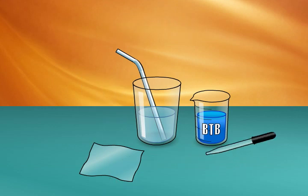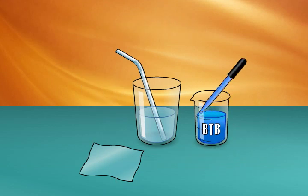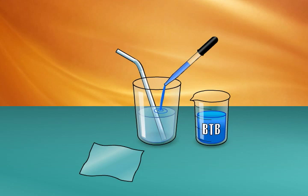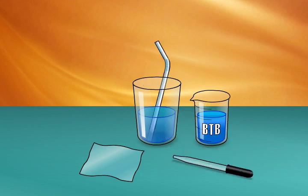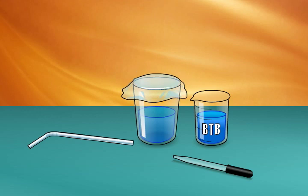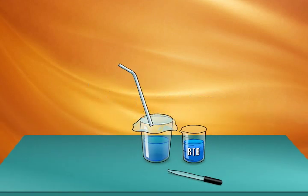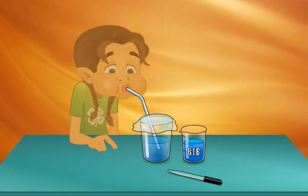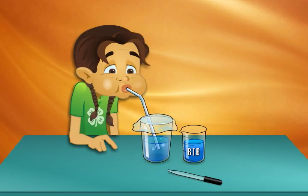First, using an eyedropper, add one dropper full of BTB solution to the first cup of water and stir with the straw. Next, using a square of plastic wrap, cover the top of the cup, insert the straw into the cup, and slowly blow bubbles.